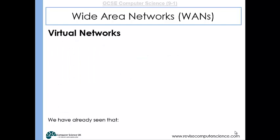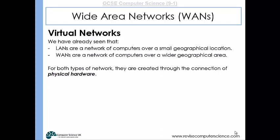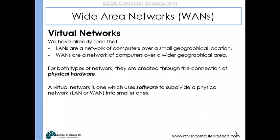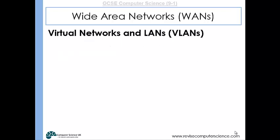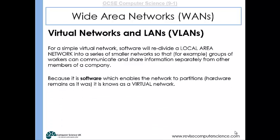Now we'll look at virtual networks. Local area networks cover a small geographical area and wide area networks cover a wide geographical area, and both types are created through physical connections of hardware. A virtual network is one that uses software to split up a physical network — it could be a LAN or a WAN — into smaller ones. If you use software to subdivide a local area network, that's known as a VLAN, a virtual LAN. Software will re-divide a local area network into smaller networks so that smaller groups of workers can communicate separately from other people in the company. Because it's software which enables the subdivision, it's known as a virtual network.